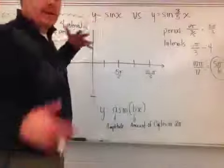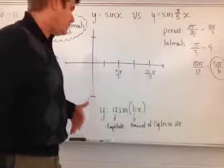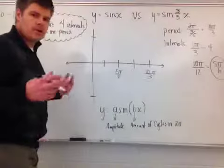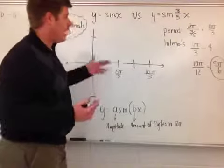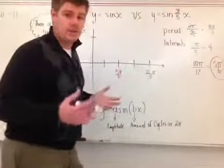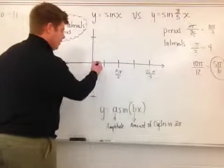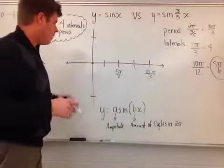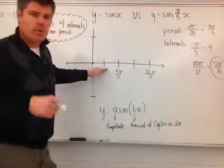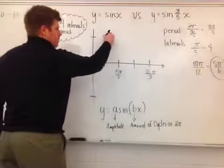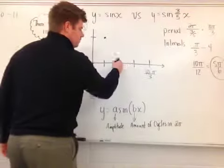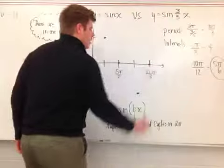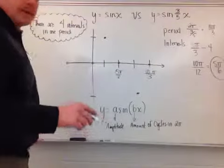Now I look at the amplitude — the coefficient of the function is one, so the maximum and minimum heights are one and negative one. I start at the intercept: sine of three-fifths times zero equals zero, so the input of zero gives an output of zero. Following the sine pattern for a positive function: the next interval is the maximum, then back to zero, then the minimum, then back to zero.